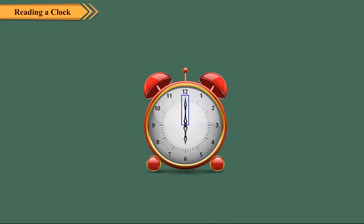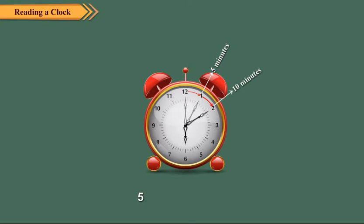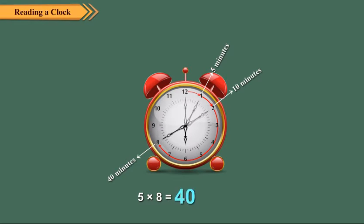We know that the minute hand moves from one number to the next in 5 minutes. So, we can find the number of minutes indicated by the minute hand using the multiplication table of 5. If the minute hand is at 2, then it is 5 into 2, which is equal to 10 minutes. If the minute hand is at 8, then it is 5 into 8, equals to 40 minutes.